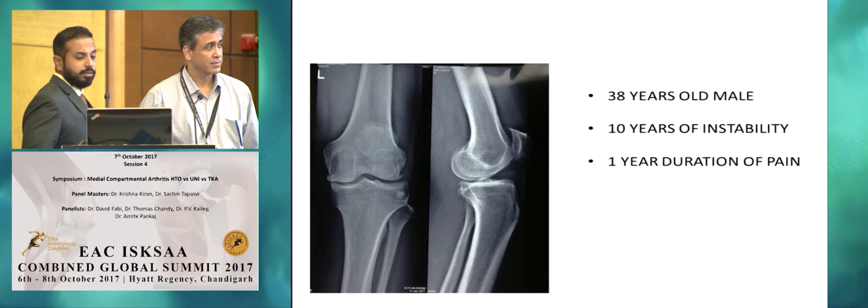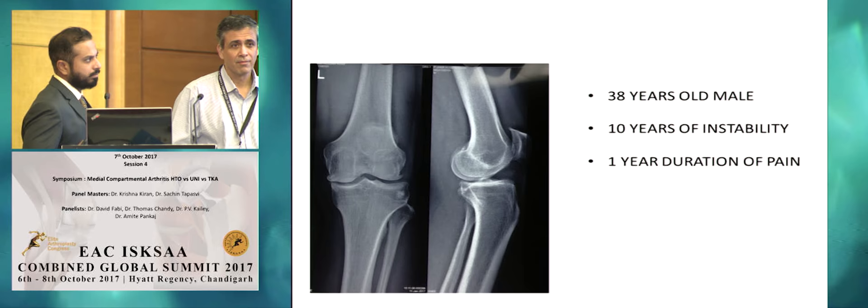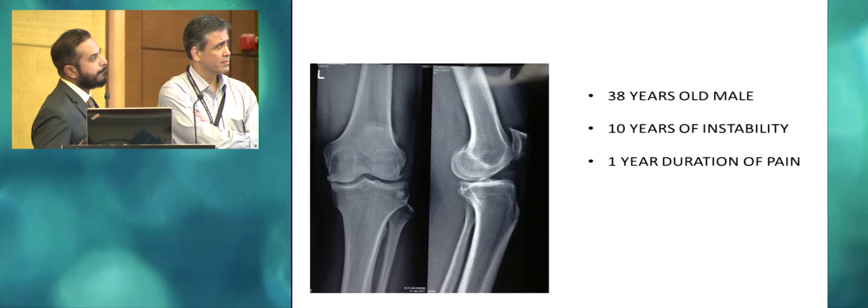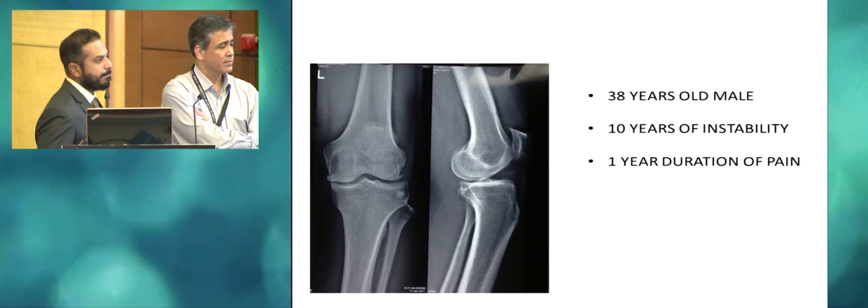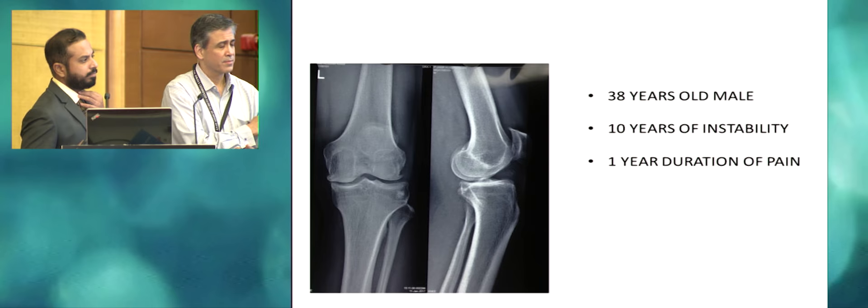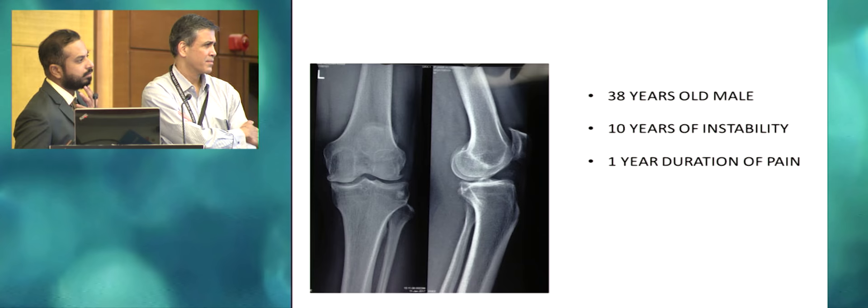Can we have a scanogram? Do you have a long film? We had a long film, but this is what we have. There is varus alignment of that knee and he has instability and one-year duration of pain. If you look at the lateral film, there is obviously a sign of ACL insufficiency. The erosion is on the posterior side also. So I think it is ACL insufficiency. What is the clinical instability like? It is ACL insufficient. In case he is a surgical candidate — meaning he has significant, debilitating pain — after getting a long film radiograph, I would offer him an HTO plus or minus an ACL reconstruction.